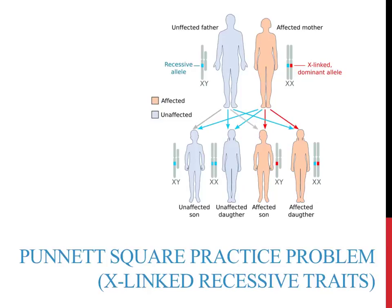The image on this slide shows a cross between an X-linked recessive trait. Setting up a Punnett square is about the same, but the results can be significantly different due to chromosomal differences between males and females.